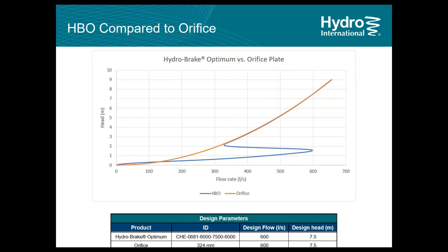Why use a HydroBrake rather than just an orifice plate? A HydroBrake outlet will always be larger than an equivalent orifice, meaning larger clearance and reduced risk of blockage. For example, with a design flow of 600 liters per second at 7.5 meters of head, the HydroBrake outlet is 681 millimeters while the equivalent orifice would be only 324 millimeters. The HydroBrake also discharges significantly more at low head than an orifice, directly reducing the upstream storage requirement and greatly reducing project cost.